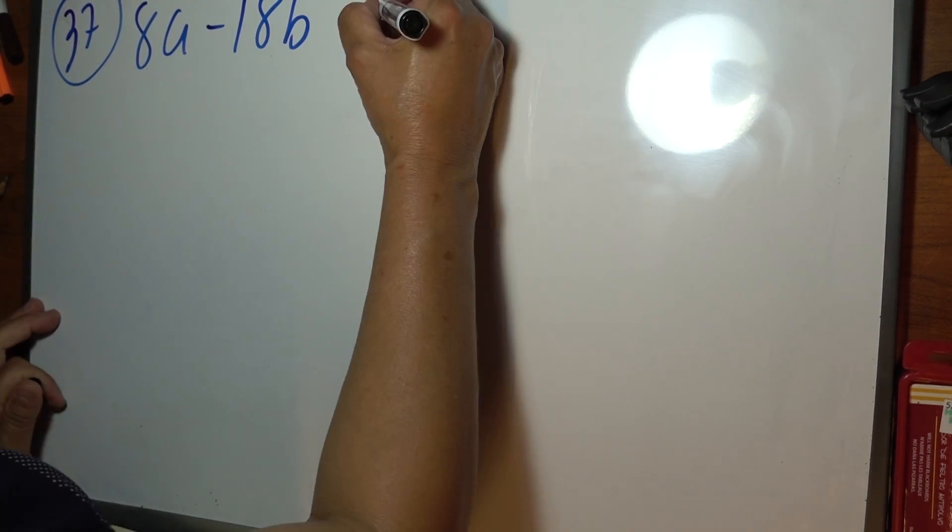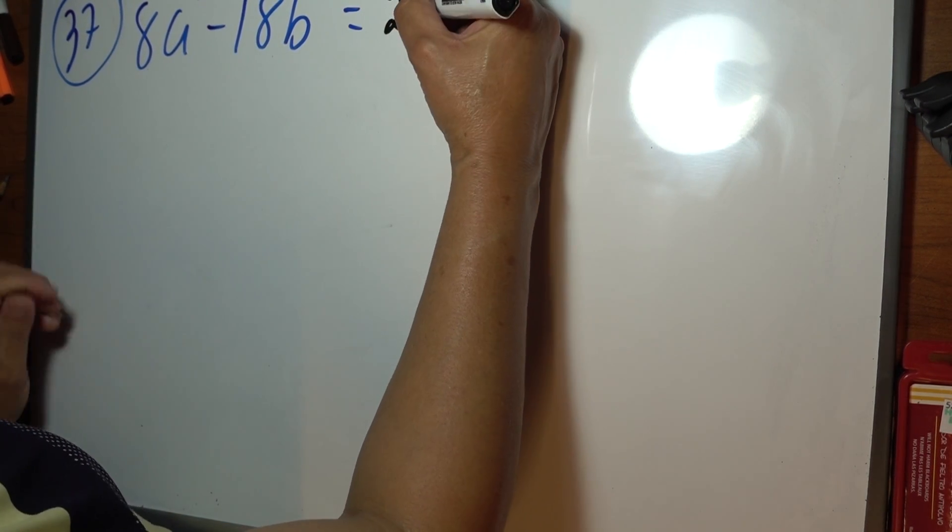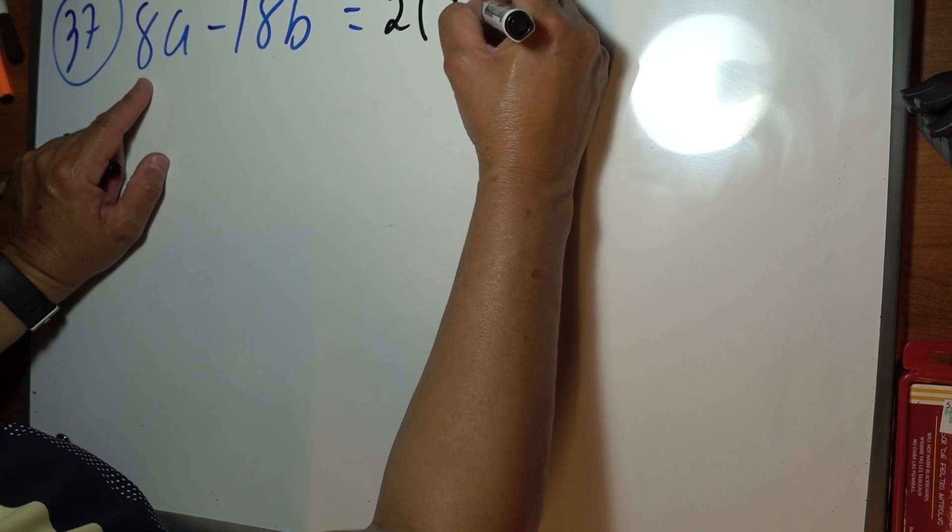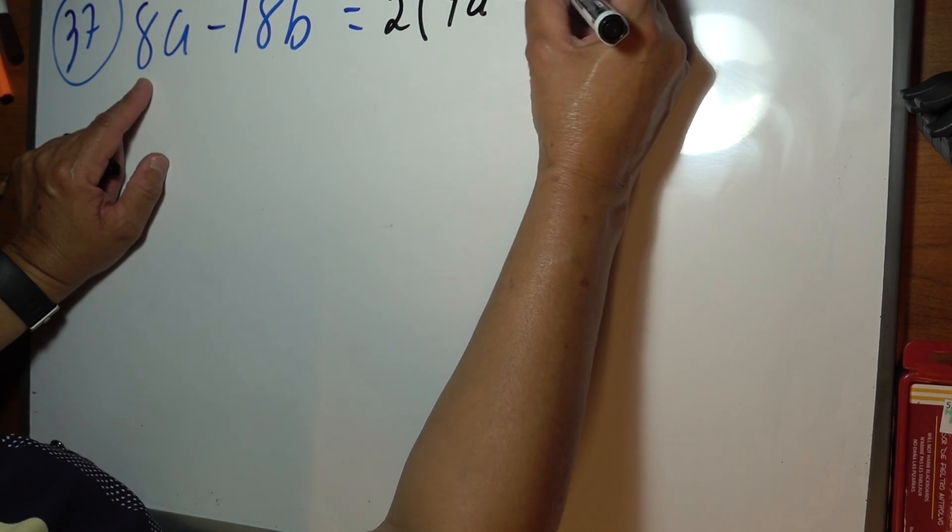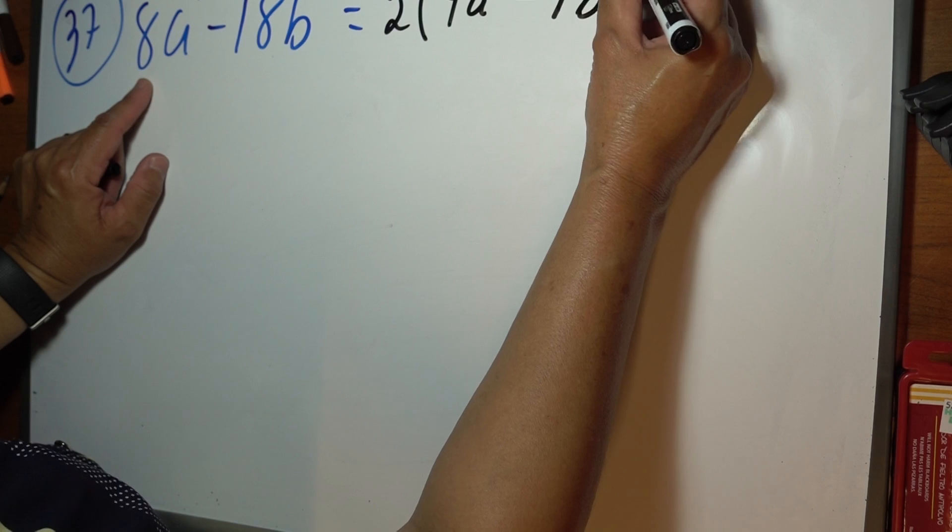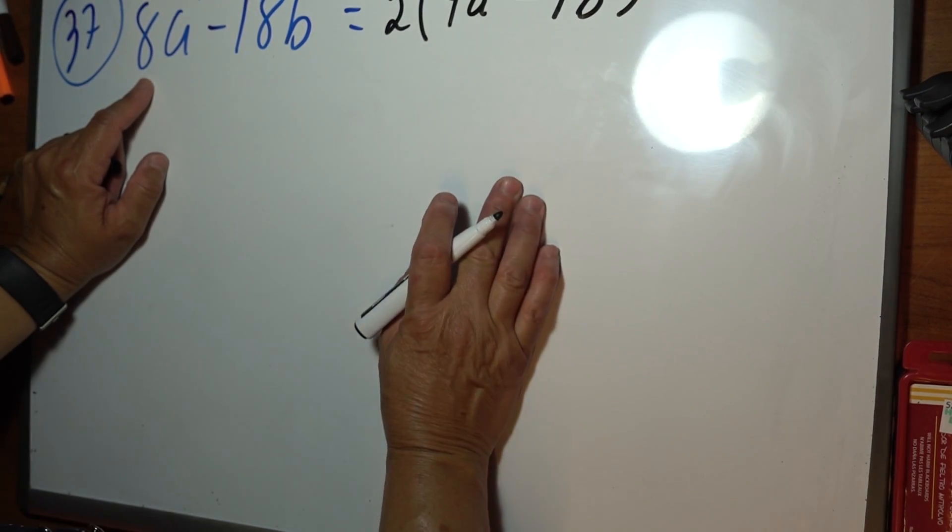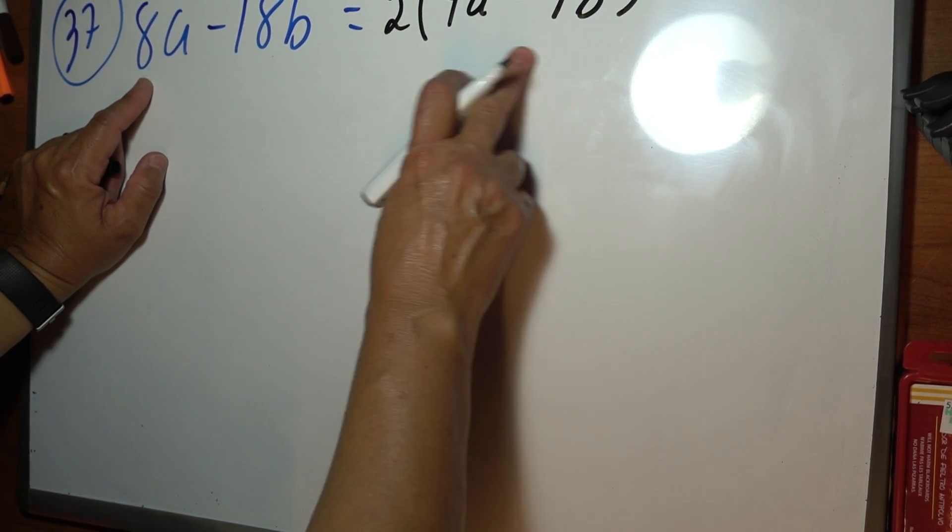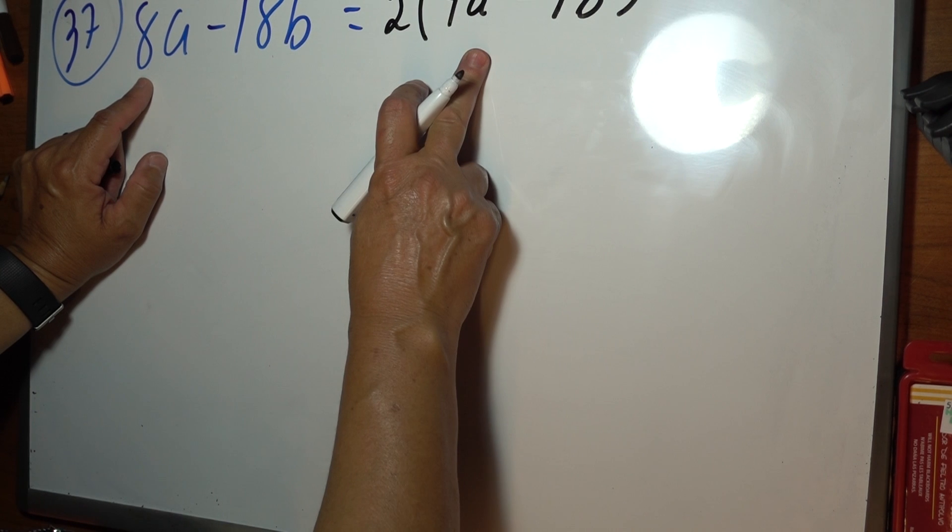So, I'm going to put out the 2 times 4a to the 4th minus 9b squared. Okay, now check this one to see if it's factorable, which it is.